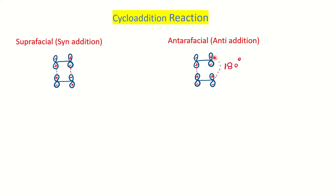When different-phase interaction occurs and bonding is not possible on the same face, the molecule has to rotate by 180 degrees. This type of addition is called anti-addition or antarafacial addition. So in cycloaddition, addition can take place in two ways: suprafacial or antarafacial.